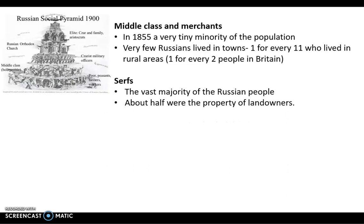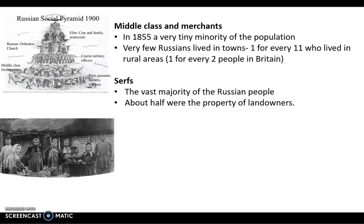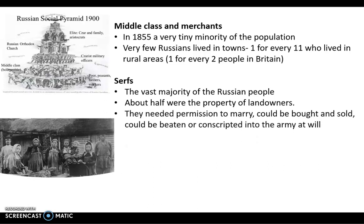The vast majority of Russian people were so-called serfs, and they were the property of their landowners — people who worked the land and were owned by those landowners. Serfdom is not quite slavery, but it's very similar in many respects. The serfs needed permission to marry from their landowner, they could be bought and sold, they could be beaten at will, and they could be conscripted into the army at will. So they had very little personal freedom.